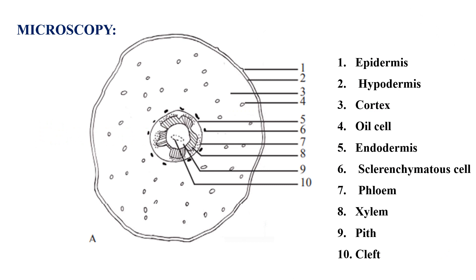In the microscopical investigation, this is a transverse section diagram showing the layers present in the valerian rhizome. It starts with the epidermis layer — in old rhizomes this is converted to cork. This is followed by a layer of hypodermis, then the wide cortex layer characterized by the presence of several oil cells. The innermost layer of the cortex is the endodermis, and then the stele region characterized by a sclerenchymatous pericycle encircling the vascular bundle constituted of phloem and xylem.